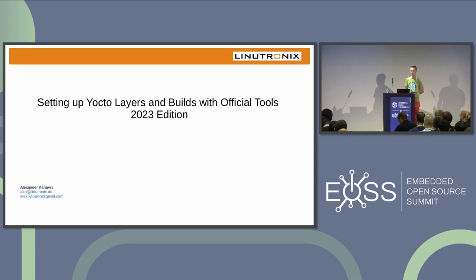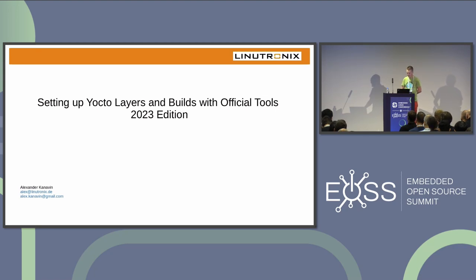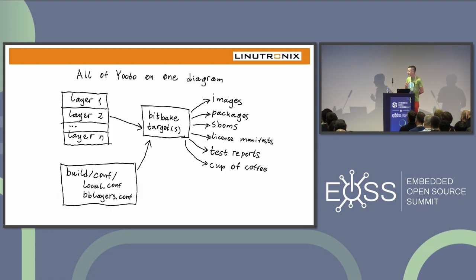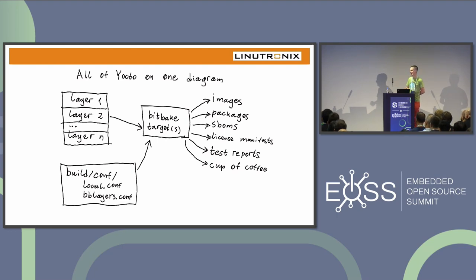I also try to find time maintaining OpenEmbedded Core, keeping it up to date and fixing bugs when I see them. Before we go to the subject, I'd like to quickly review what Yocto actually does. Here is a professional-looking chart that explains all of Yocto on a single slide. As you may know, Yocto is a set of tools to make custom Linux distributions — that's a single sentence description.